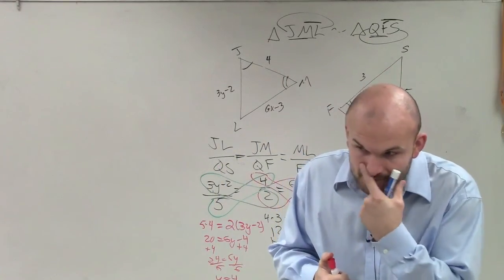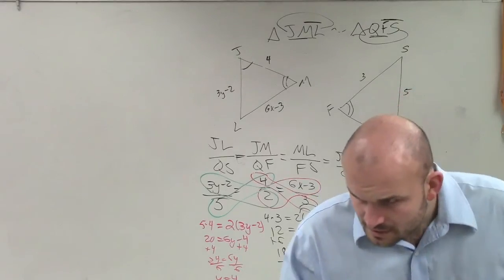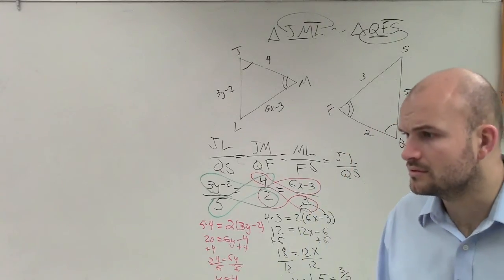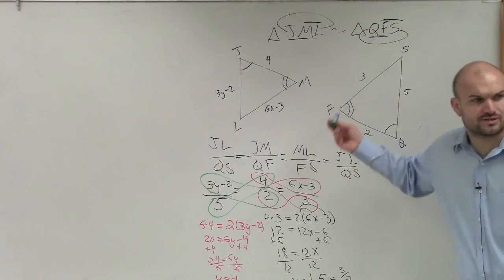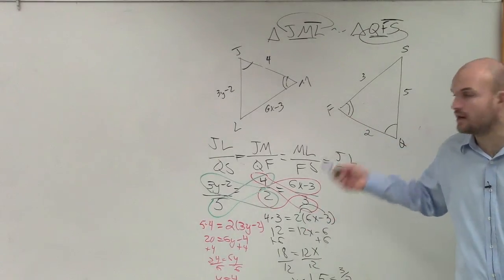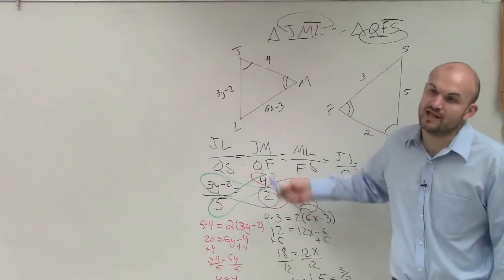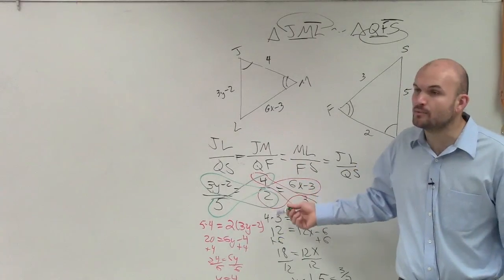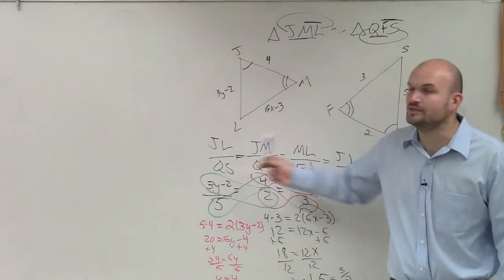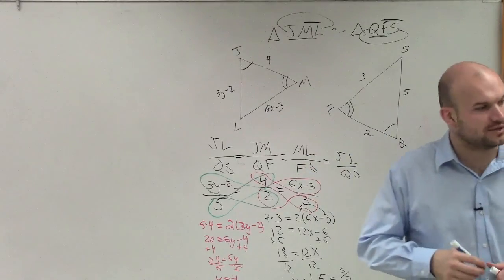So when applying these types of problems, you need to make sure that you find the proportion that does not have any variables. Find the proportion that does not have any variables and then use that to set two other proportions equal to it to solve.